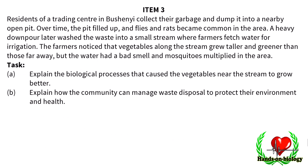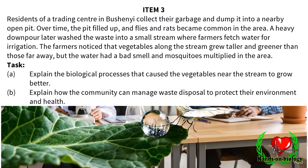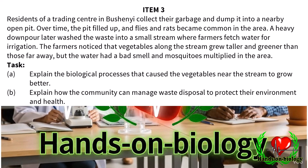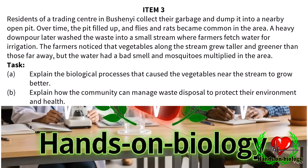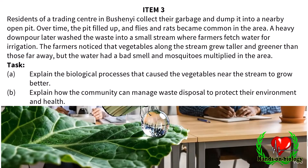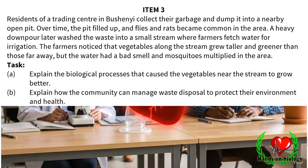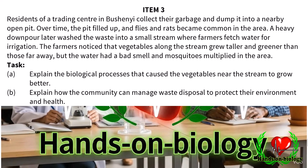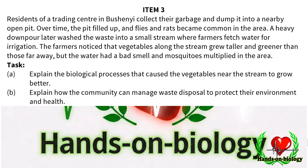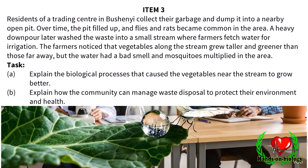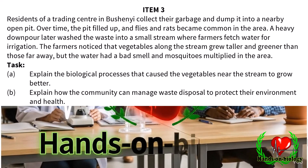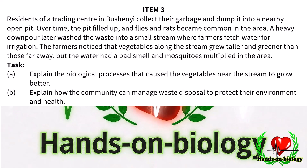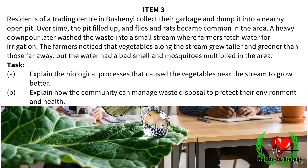Item 3: residents of a trading center in Buchenyi collect their garbage and dump it into a nearby open pit. Over time the pit filled up, and flies and rats became common in the area. A heavy downpour later washed the waste into a small stream where farmers fetch water for irrigation. The farmers noticed the vegetables along the stream grew taller and greener than those far away, but the water had a bad smell and mosquitoes multiplied in the area.